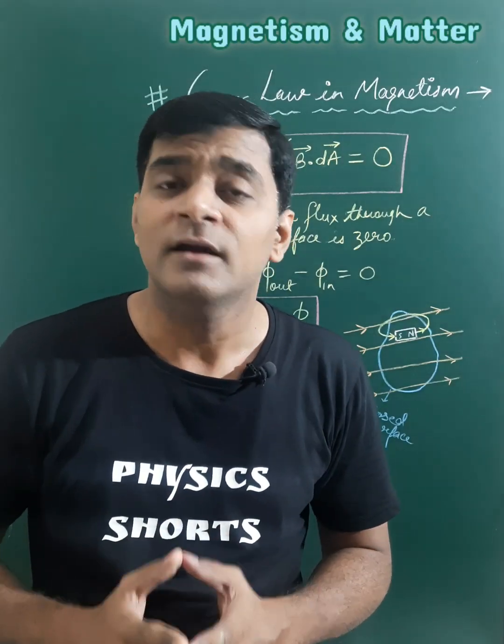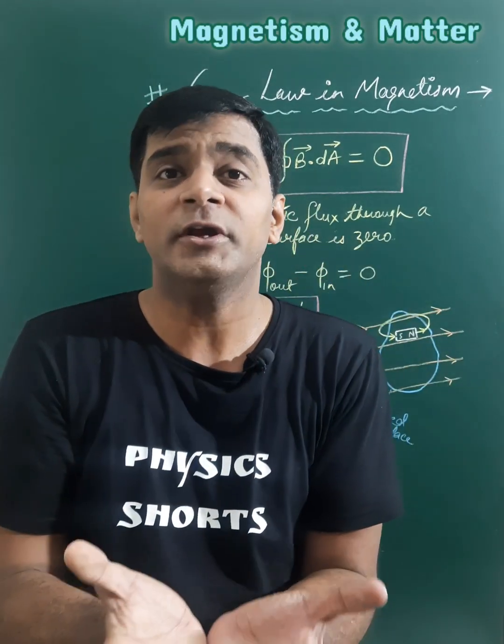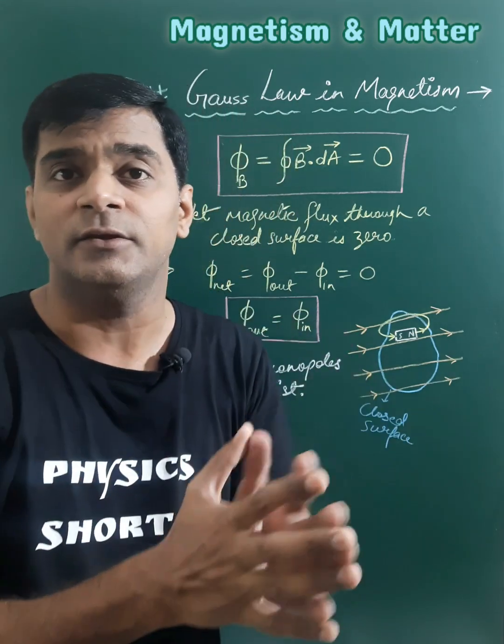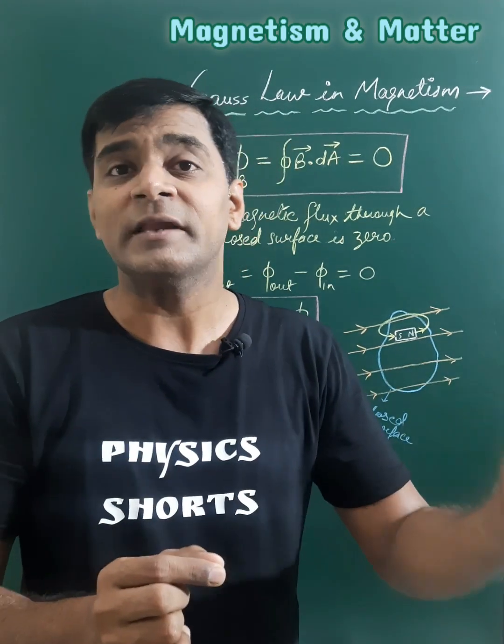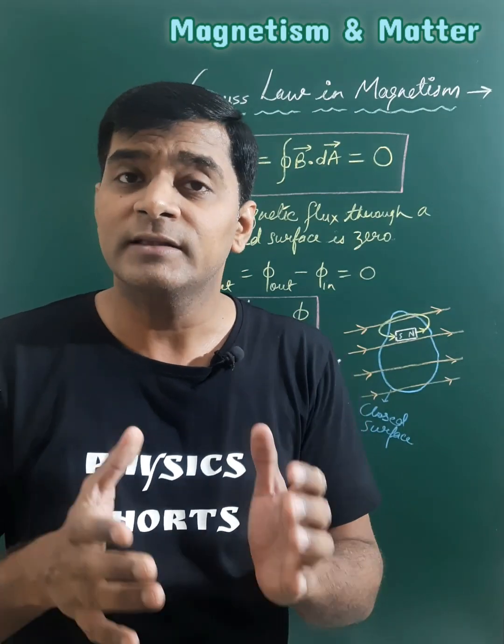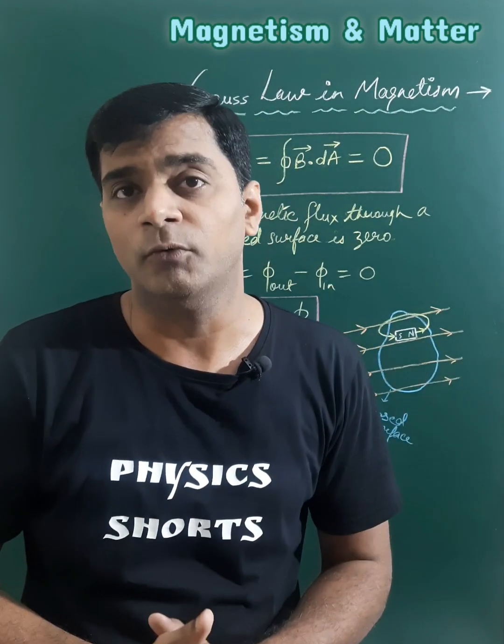Gauss law in magnetism says that the net magnetic flux associated with a closed surface is always zero. This is a consequence of the fact that magnetic monopoles never exist in nature, or we can say the magnet will always have both north and south poles.